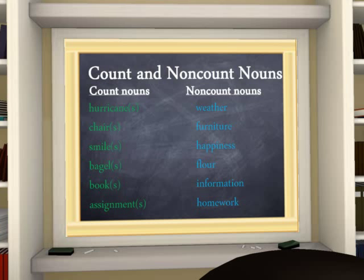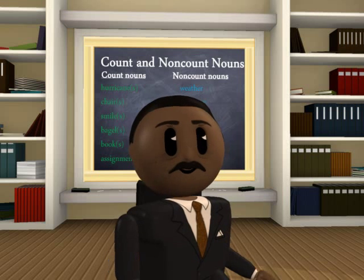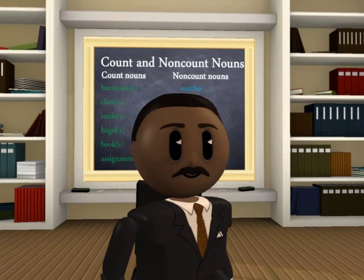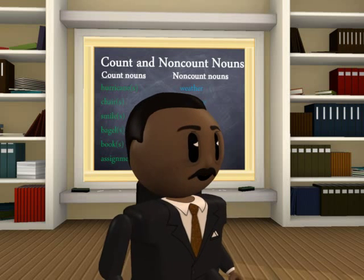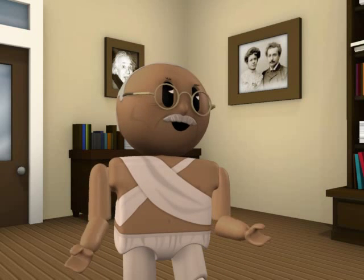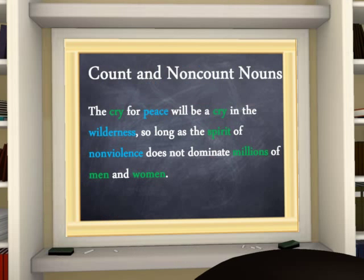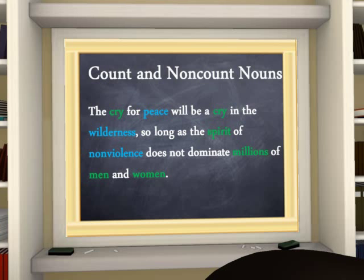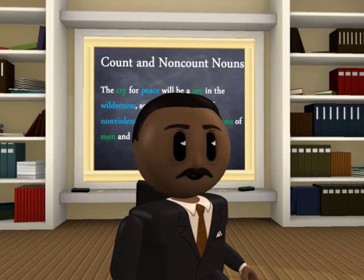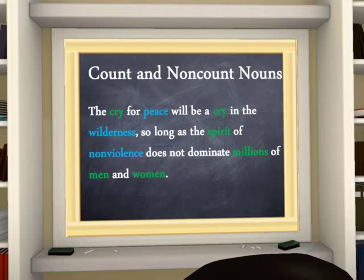Non-count noun examples are weather, furniture, happiness, information, and homework. Concrete nouns can be countable, and some proper nouns are countable. Now let us look at this sentence for examples of countable and non-countable nouns: "The cry for peace will be a cry in the wilderness, so long as the spirit of non-violence does not dominate millions of men and women." The countable nouns are colored green, and the non-countable nouns are azure.